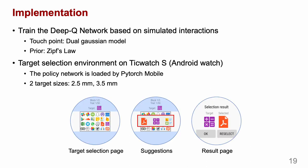We train the policy network of SETS based on simulated interactions, where the touch point was generated by the dual Gaussian model and the prior probability was generated by Zipf's law. After that, we implement a target selection environment on an Android watch and load the policy network via PyTorch Mobile. In the implementation, we consider two different target sizes. The figures show the target selection page, the suggestions, and the selection result page. The user needs to click the reselect button to cancel an incorrect selection, or click OK to start selecting the next target.